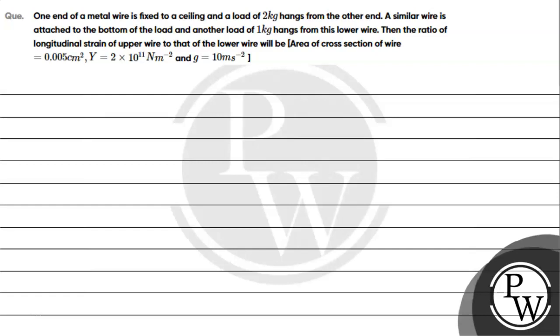Let's read the given question. One end of a metal wire is fixed to a ceiling and a load of 2 kg hangs from the other end. A similar wire is attached to the bottom of the load and another load of 1 kg hangs from this lower wire. Then the ratio of longitudinal strain of upper wire to that of the lower wire will be...